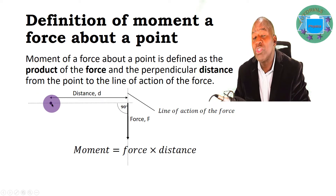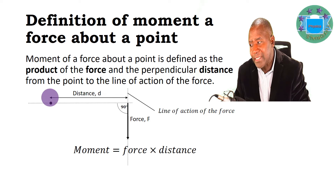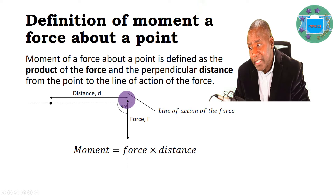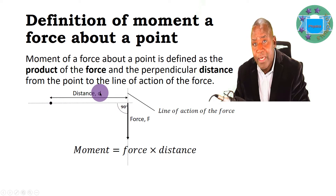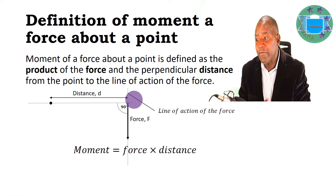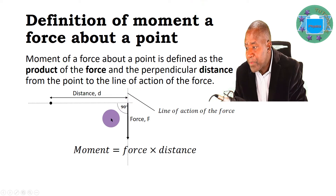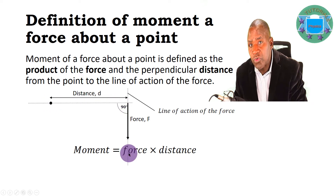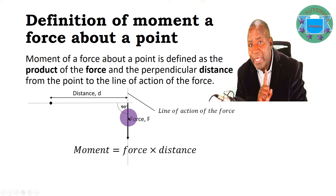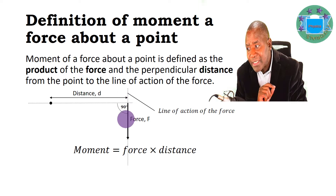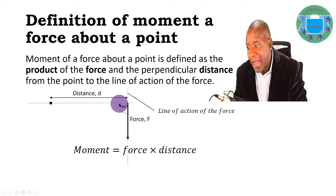How far is that point from the line of action of the force? We need the distance from that point which makes 90 degrees with the line of action of the force. When we multiply force and distance, it is not just a matter of multiplying any distance visible on the diagram. We must identify the distance from the point about which we are taking moments to the line of action of the force such that the distance makes 90 degrees with the line of action. Always observe that the angle between the force and the distance must be 90 degrees — that is why the term perpendicular distance is used.